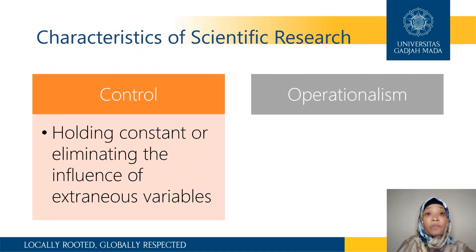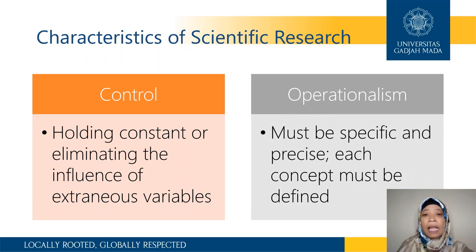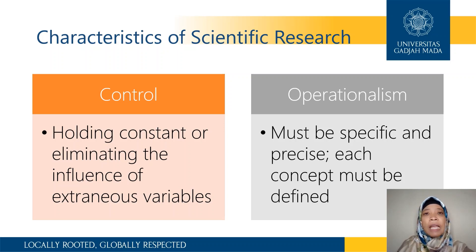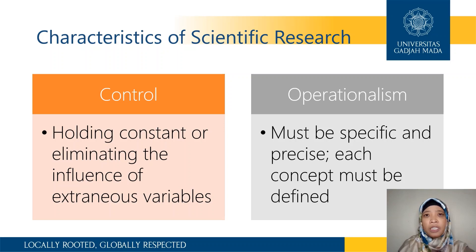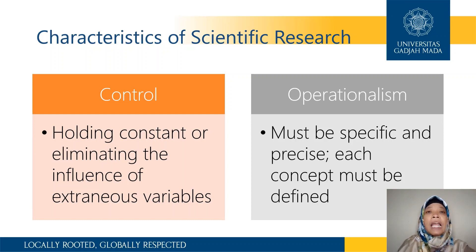The second characteristic of scientific research is operationalism. We have to be specific and precise in defining each variable that we are trying to explain. Each concept must be defined. For example, if we want to study intelligence, we have to define it in a very specific and precise way — we have to operationalize what intelligence means and how we measure it, whether using an IQ test or another type of cognitive test. We need to know not only the definition but also how we can measure that variable.